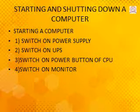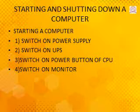Now let's move to starting and shutting down a computer. Starting a computer has four points to remember and it must be done in order. First, we have to switch on the power supply — the main power supply button. Then switch on the UPS, which keeps the computer working if electricity goes off. Then switch on the power button of the CPU, and then the monitor button.